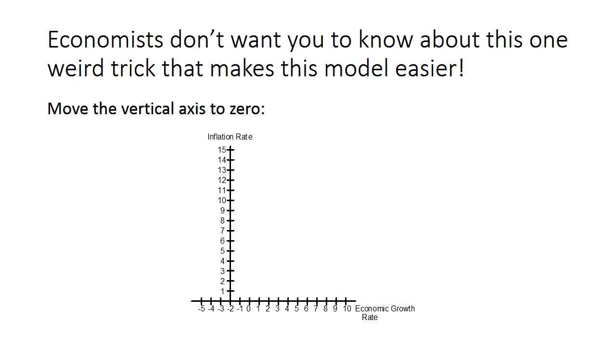Now, Cowan and Tabarrok do something strange with the graph of this model, and I'm really not very happy with it. It causes unnecessary confusion. For some reason, they place the vertical axis at negative two instead of zero.